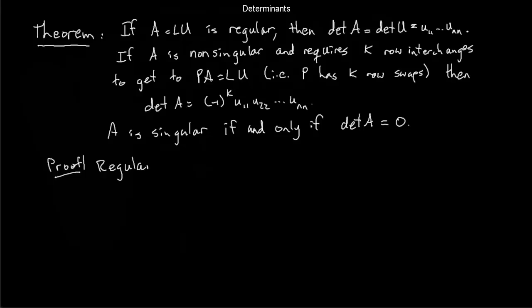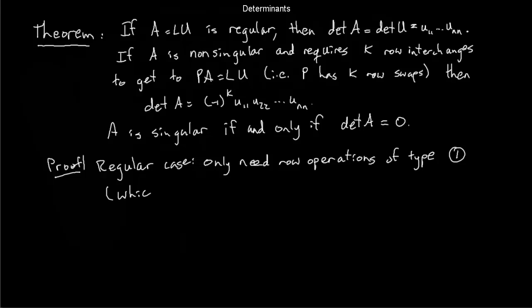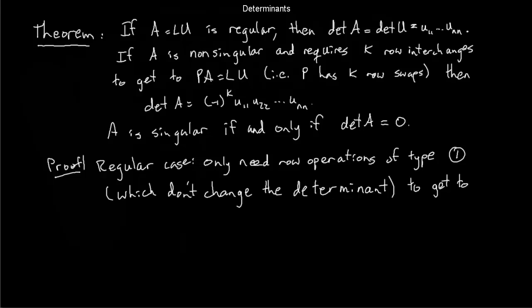Let's prove this, starting with the regular case. In the regular case, all pivots stay non-zero as I move down, so I never have to swap any rows. Those row operations are type 1 — adding a multiple of row i to row j — and by property 1, those don't change the determinant. So I can reduce my starting matrix to upper triangular U using only row operations that don't change the determinant, meaning the determinant of A equals the determinant of U.